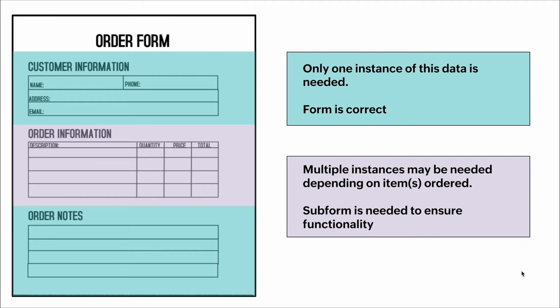Here's a visual example: we have an order form. This order form collects customer information like name, phone number, address, and email. It also contains order information like products, quantity, price, and total, and then it has order notes. Some information — the customer information and the order notes — only requires one entry, so that is fine in a regular form.